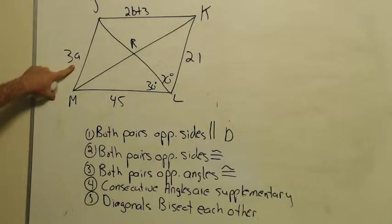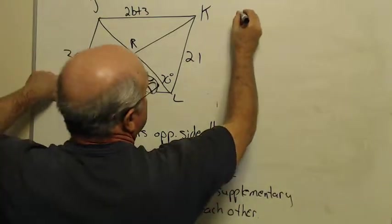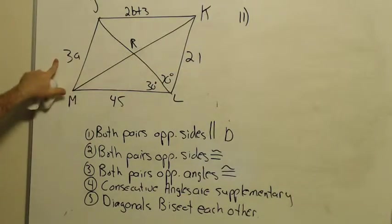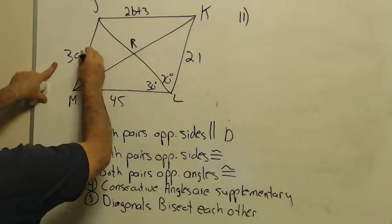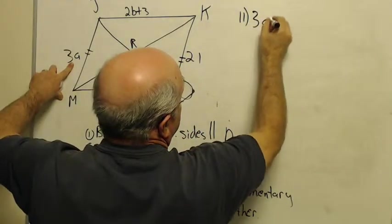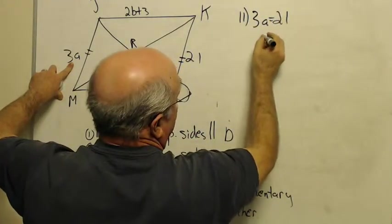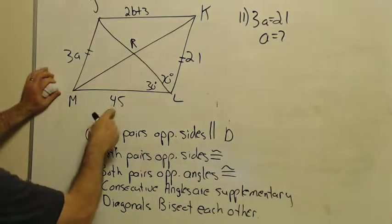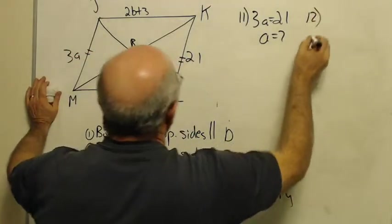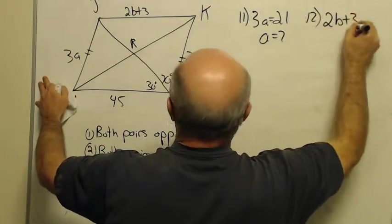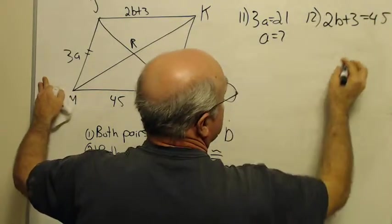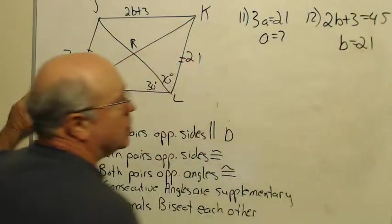If you're trying to find A, which is actually problem number 11, you should remember that opposite sides are congruent. And if you look at your first diagram, we mark those opposite sides congruent. That means equal. So 3A is 21, and divide, you'll get A being 7. You can get B in exactly the same way on number 12. You've got 2B plus 3 is 45, and if you'll trust me on this, then B is going to end up being 21.